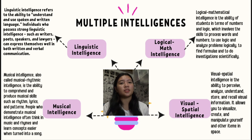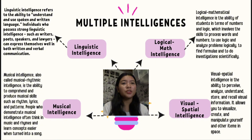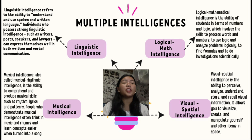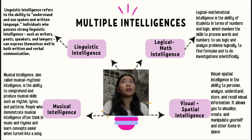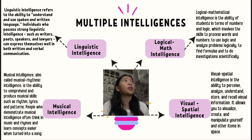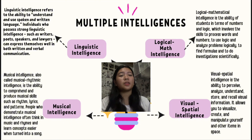The first intelligence is linguistic intelligence, which refers to the ability to understand and use spoken and written language. Individuals who possess strong linguistic intelligence — such as writers, poets, speakers, and lawyers — can express themselves well in both written and verbal communications. These are people who find and use the right words to express themselves and share their ideas precisely. The next is logical-mathematical intelligence.